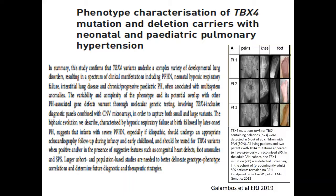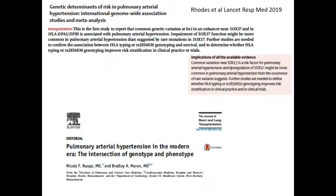Returning to genetics, TBX4 is currently found in neonatal and pediatric pulmonary hypertension. This paper is interesting in showing the different presentations of TBX4, which goes beyond the patella syndrome with PH. Particularly important for newborns presenting with so-called PPHN — they may have lesions linked to TBX4 mutations. This is something to look for when you have a newborn that is difficult to treat.